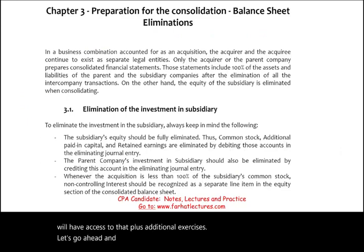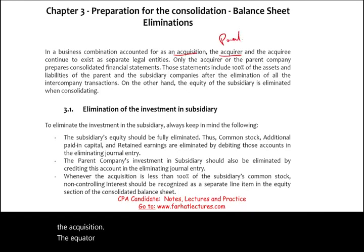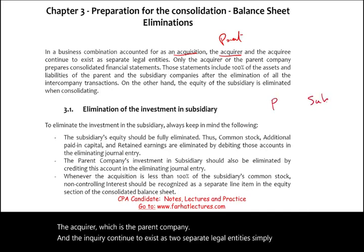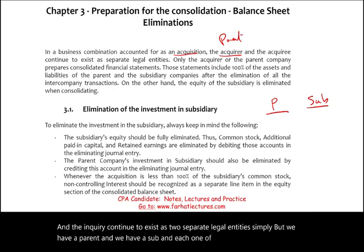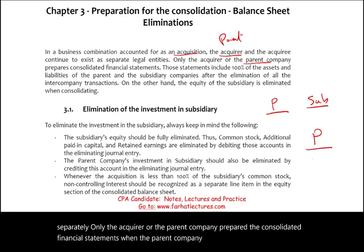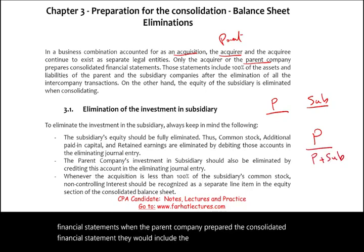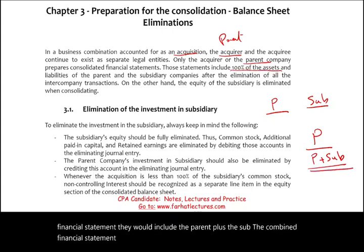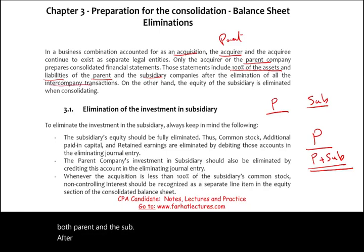In a business combination accounted for using the acquisition method, the acquirer — the parent company — and the acquiree continue to exist as two separate legal entities. We have a parent and a subsidiary, and each keeps their books separately. Only the parent prepares the consolidated financial statement, which includes 100% of the assets and 100% of the liabilities of both parent and subsidiary, after processing the elimination of intercompany transactions.